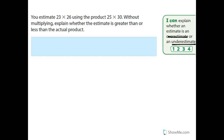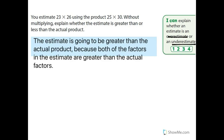The estimate is going to be greater than the actual product because both of the factors in the estimate are greater than the actual factors. 25 is greater than 23, and 30 is greater than 26. So because both of these are greater than the actual factors, the product is going to be greater than the actual product.